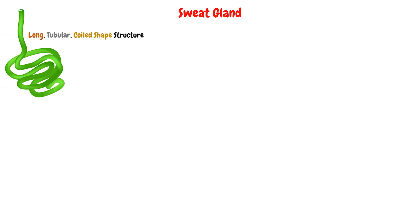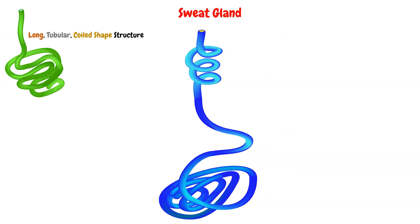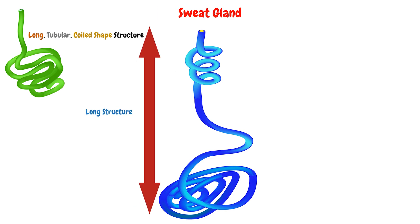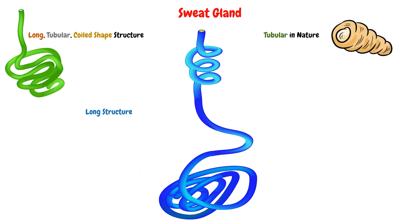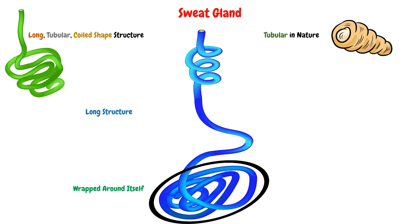Let's explain this phrase. The sweat gland, which is the gland that secretes sweat, is a long structure and tubular in nature because it is composed of tubules, and it is coiled in shape because it wraps around itself.